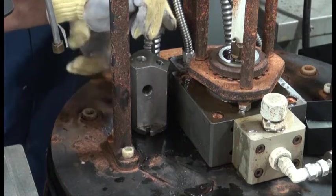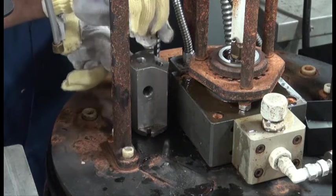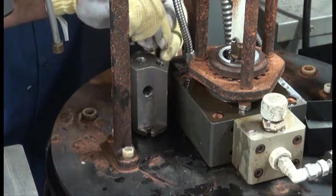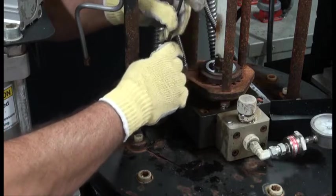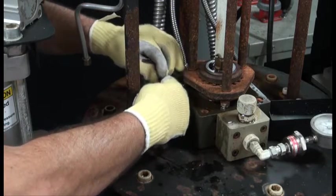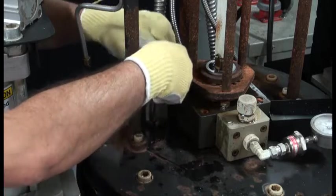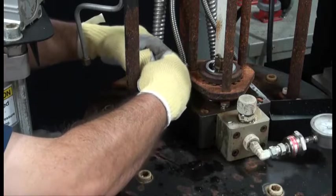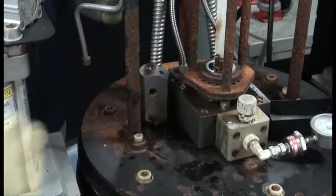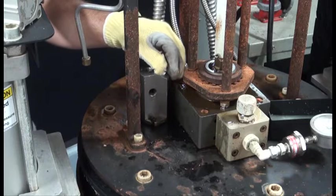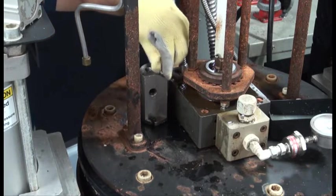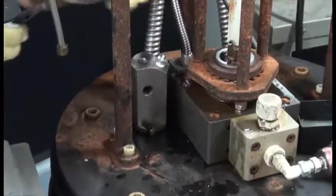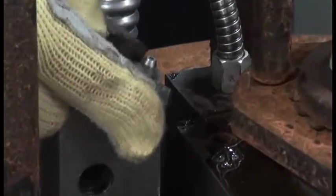Secure the purge block to the platen cover using two 6mm socket head cap screws. Attach a high temperature grease fitting Dynatec part number 117669 to the purge block in place of the purge valve handle that was originally supplied with a drum melter. Be certain to put Teflon tape on the threads prior to installation.